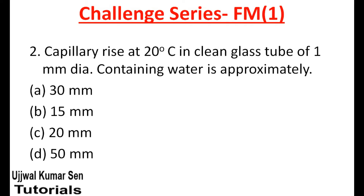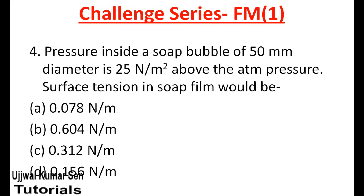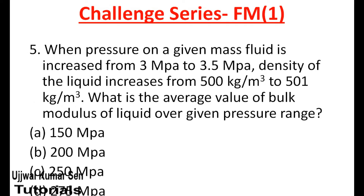First question: What is the dimension of surface tension? Second question: Capillary rise at 20 degrees centigrade in a clean glass tube of 1 mm diameter containing water is approximately how much? If the angle of contact of a drop of liquid is acute, what will happen? Next: pressure inside a soap bubble of 50 mm diameter is 25 Newton per meter square above atmospheric pressure — find the surface tension in the soap film.